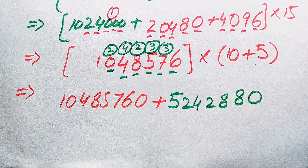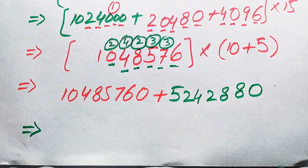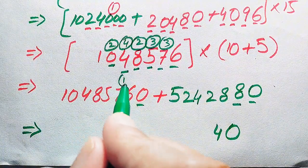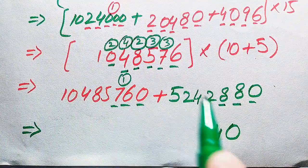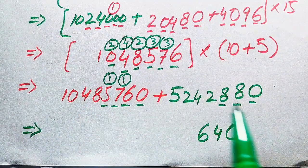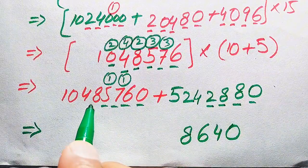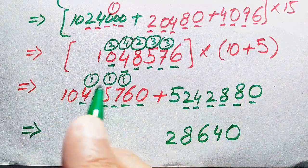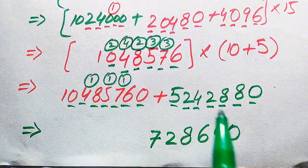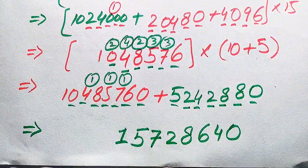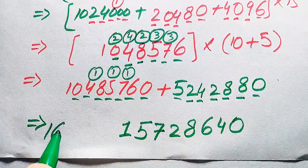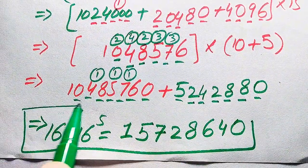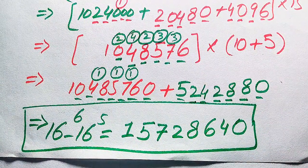In the final step, we add these two results using traditional addition: 10,485,760 plus 5,242,880. Adding column by column: 0+0=0; 6+8=14, write 4 carry 1; 7+8=15, plus 1=16, write 6 carry 1; 5+2=7, plus 1=8; 8+4=12, write 2 carry 1; 4+2=6, plus 1=7; 0+5=5; final digit is 1. So 16^6 minus 16^5 equals 15,728,640. Thank you for watching — please subscribe for more exciting videos.